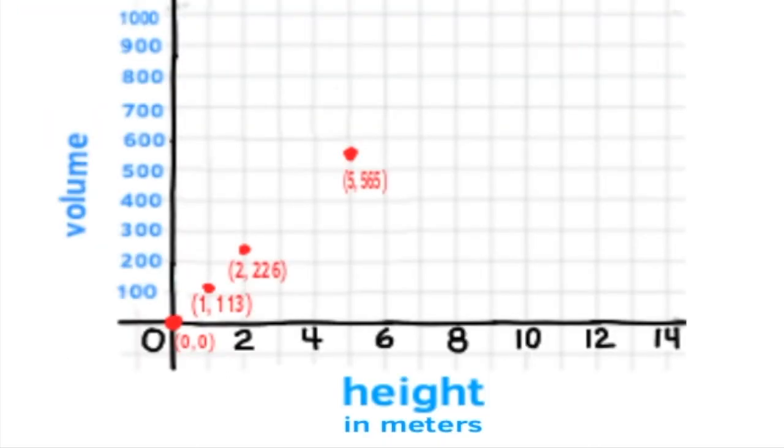Here are the points on the graph. With a height of 0, the volume is 0. With the height of 1 meter, the volume is 113 meters cubed. Double that height, and your volume doubles. So a height of 2 meters brings a volume of approximately 226 meters cubed. You'll notice that this is making a straight line. The relationship between the height of a cylinder and the volume of the cylinder is proportional.